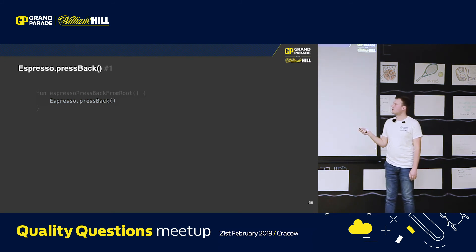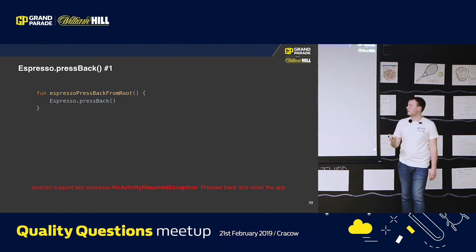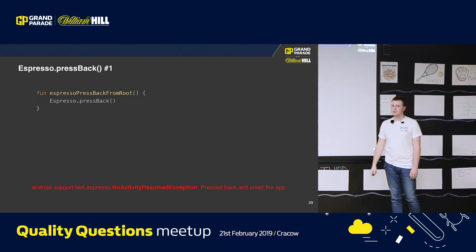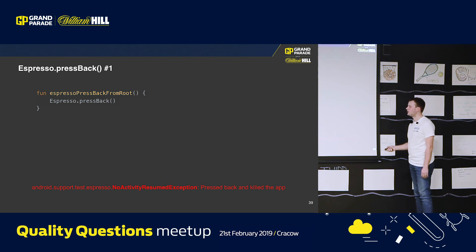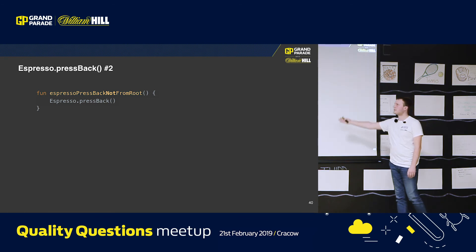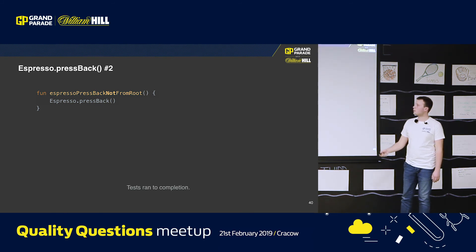In Espresso it looks like this: Espresso.pressBack — quite intuitive. But when you press this back button from the root of your application, you will get a no-activity-resumed exception, because Espresso works on the activity — it should be active and present. Clicking back from root closes your activity, which leads to an exception. When you press back from some stack of screens rather than from root, it will be perfectly okay and your tests will run to completion.